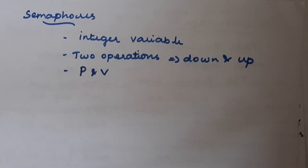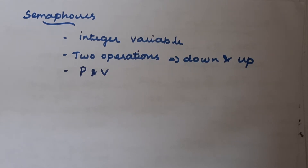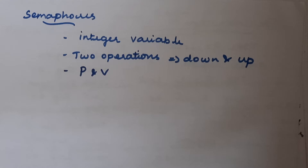In this video we will discuss semaphores — one of the techniques used in process synchronization. In these problems we get the issue called race condition, which means the processes cannot be synchronized. If two processes are performing or accessing common data, or are interdependent with each other, they may get the problem of process synchronization. To avoid it, we use the technique called semaphore.